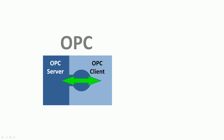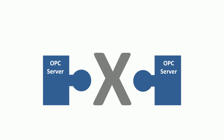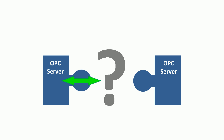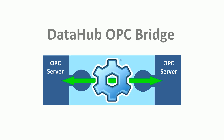OPC servers connect to OPC clients, but they don't connect to other OPC servers. So what if you need to write data from one OPC server into another? Use the DataHub OPC bridge to make the connection.